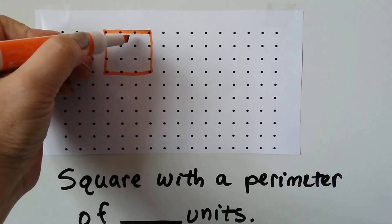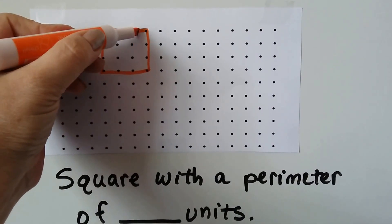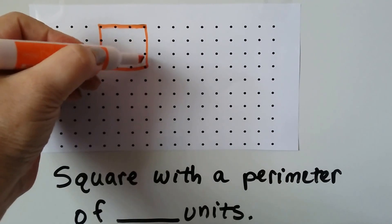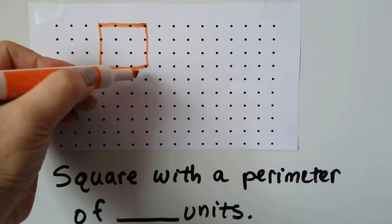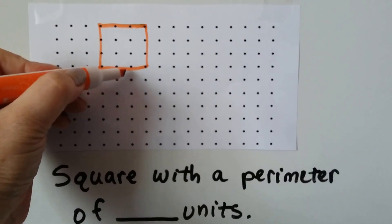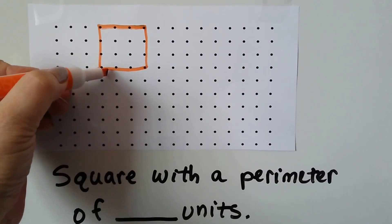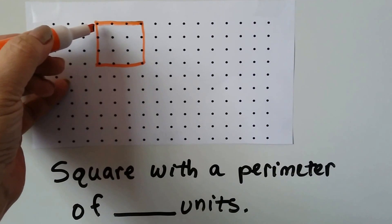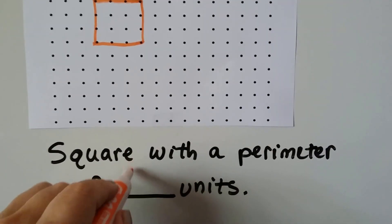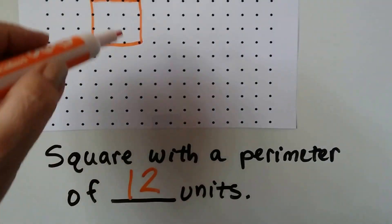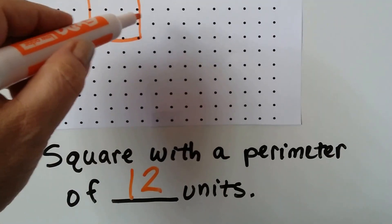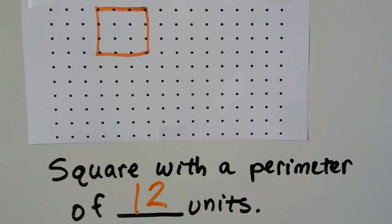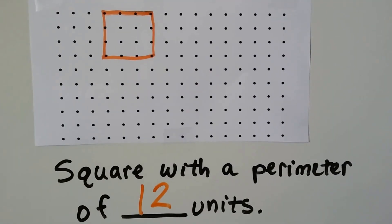What's the perimeter in units? We have 1, 2, 3, 4, 5, 6, 7, 8, 9, 10, 11, 12 units. We count the lines in between the dots and those are each a unit.